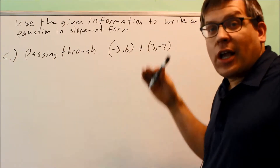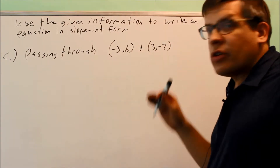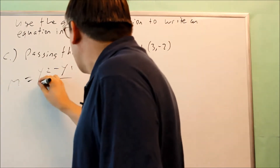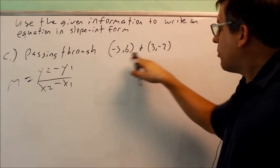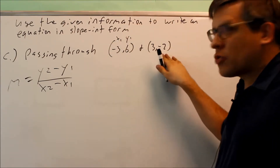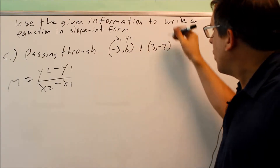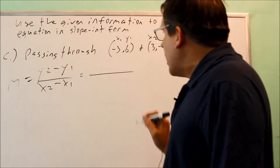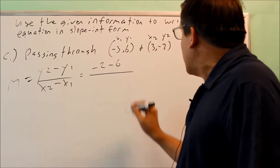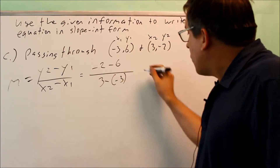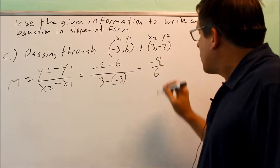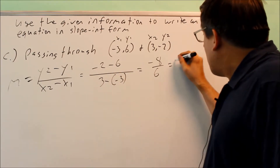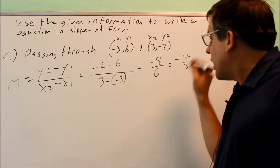What's different about part C is that the slope is not given. However, we can use the slope formula — y2 minus y1 over x2 minus x1 — with the two given points. Labeling them x1 y1 as (-3, 6) and x2 y2 as (3, -2), I get: negative 2 minus 6 over 3 minus negative 3, which gives negative 8 over 6. Reducing to lowest terms gives a slope of negative 4/3.